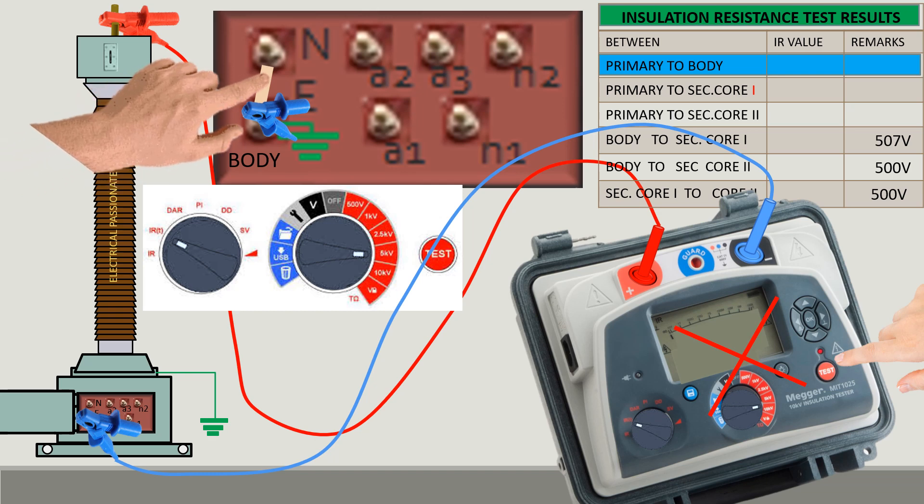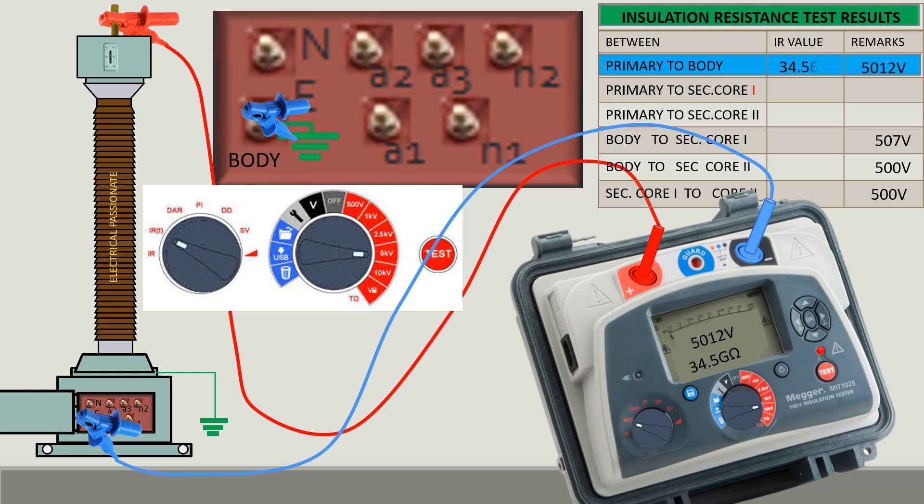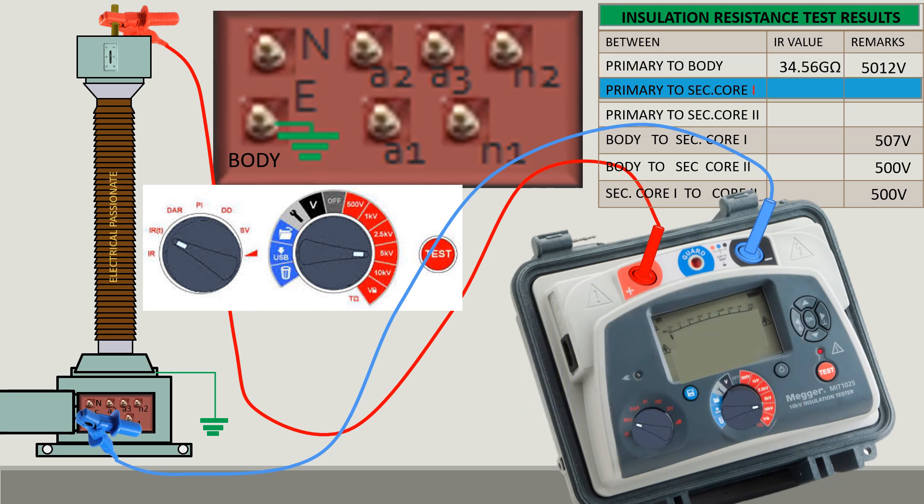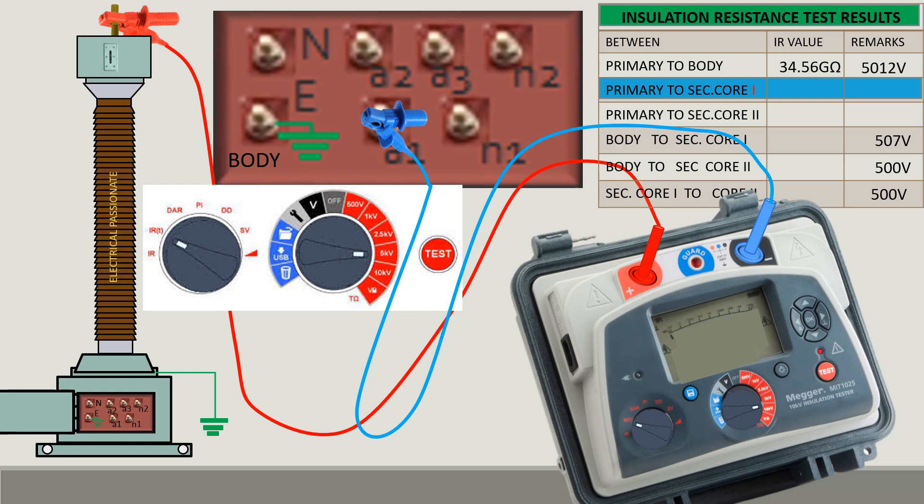Remove the link. Let me show you the numerical. Primary to core 1. Keep the voltage setting at 500 volt for the next tests as these are low voltage winding with lower insulation.